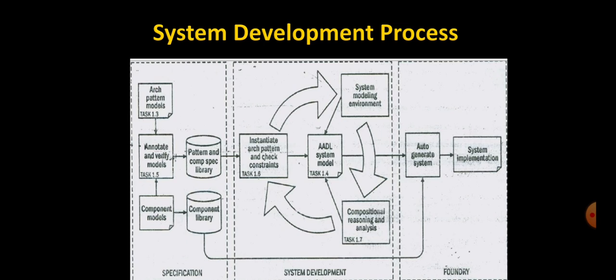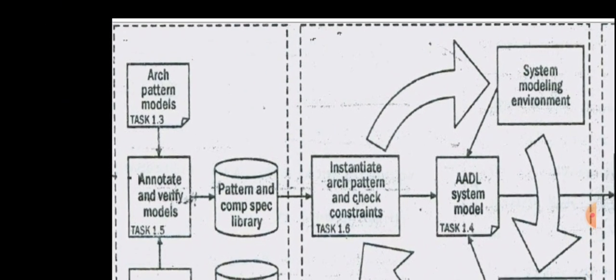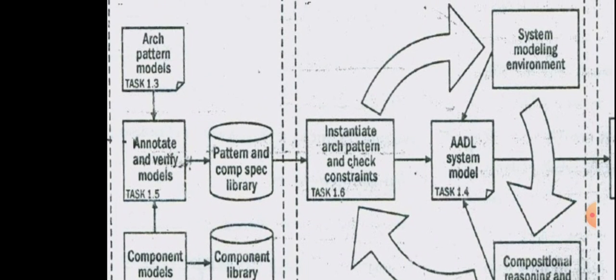The first phase is the specification phase, where models of architecture patterns and components are developed and verified. In this phase, the architecture patterns and components are getting developed and verified. These developed components are then annotated with verified properties and constraints that must be satisfied for those properties to hold.